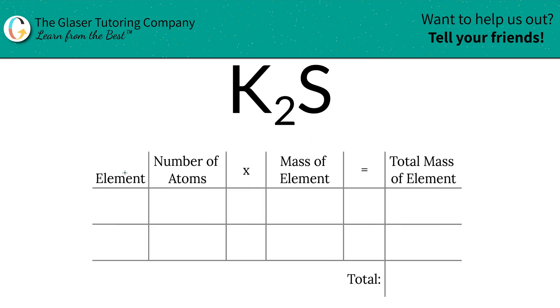I've created a nice little table to help us out. Bam. So the first thing I'm going to do is write the elements down that I see in the compound. So we have potassium and sulfur.